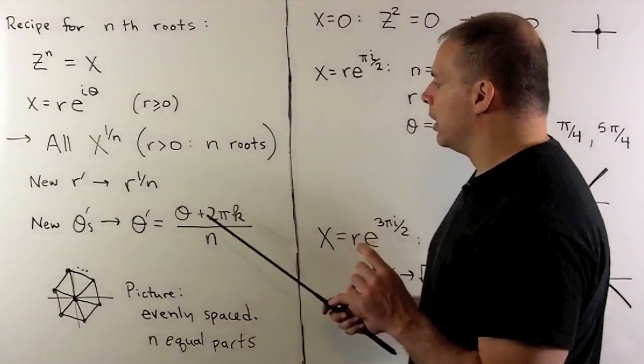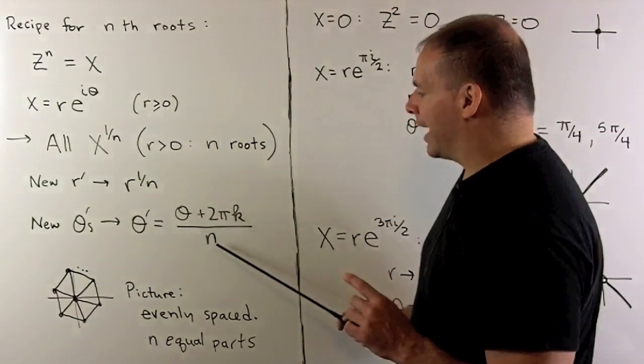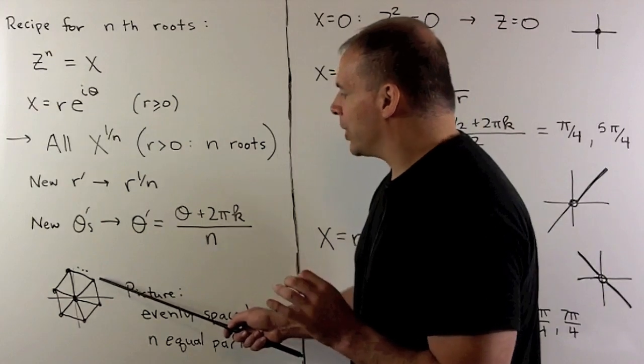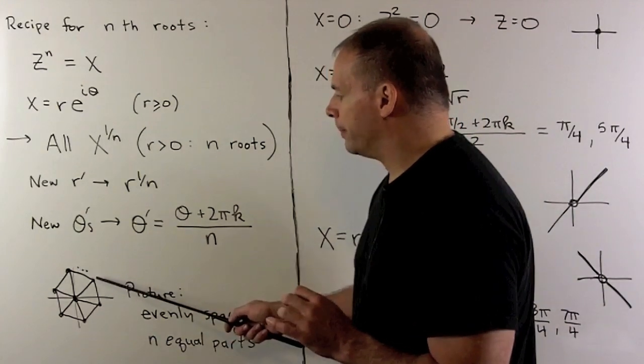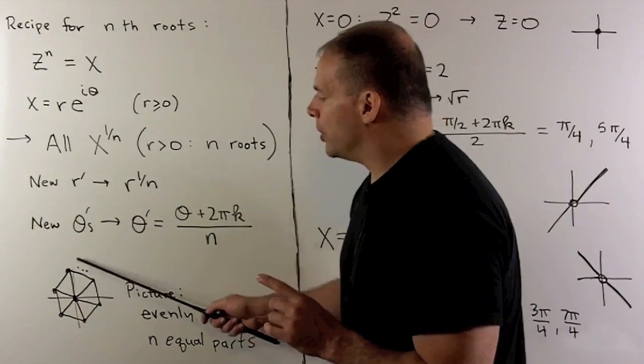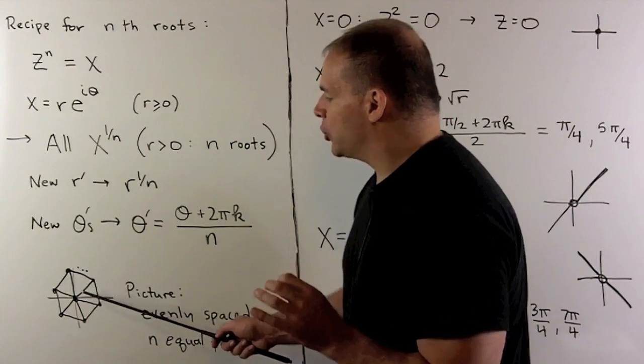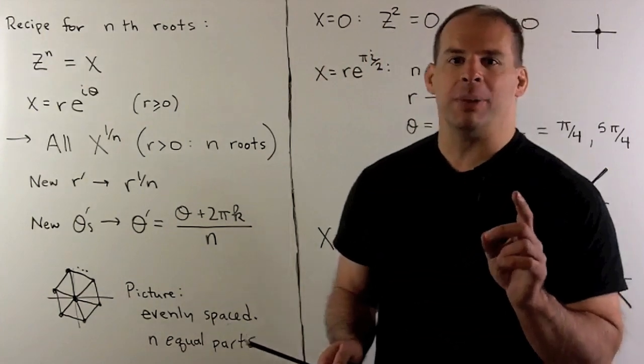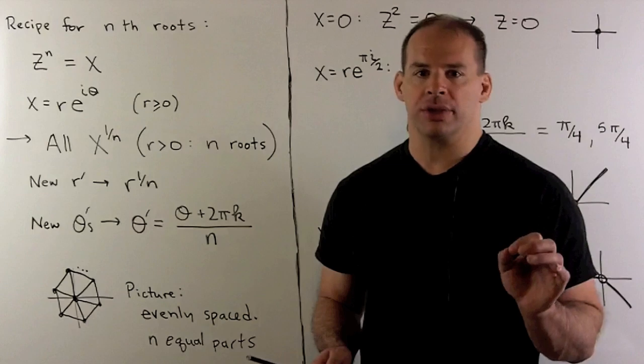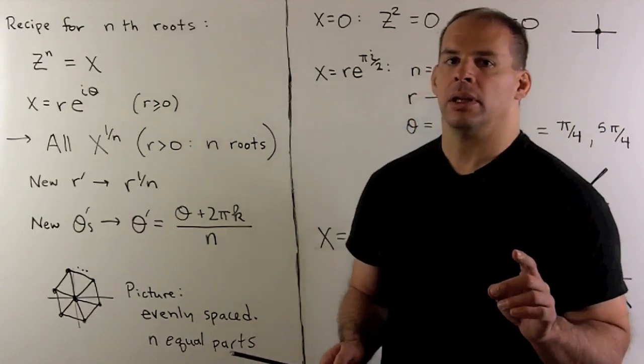So here, what we're doing, we'll take our argument, divide it by n. Then we're just going to add multiples of 2 pi over n until we go around one loop. Our points are going to be evenly spaced about the origin. If we draw the lines in through our points from the origin, we'll partition the plane into n equal parts.